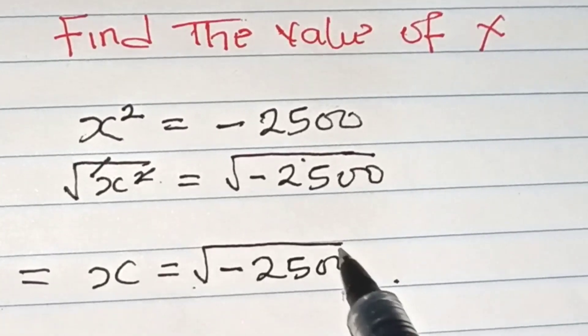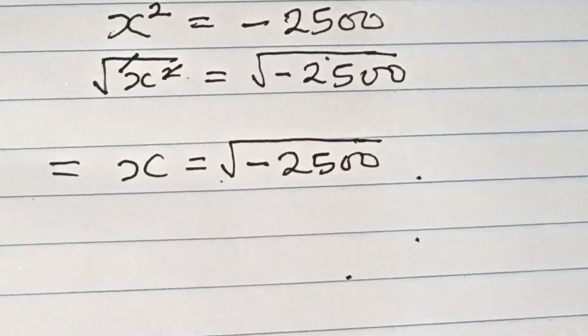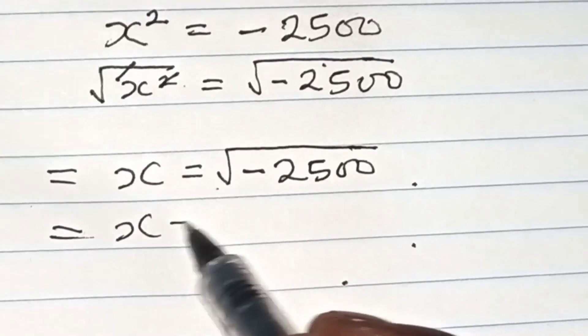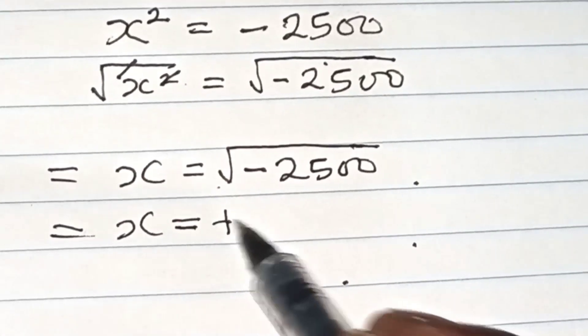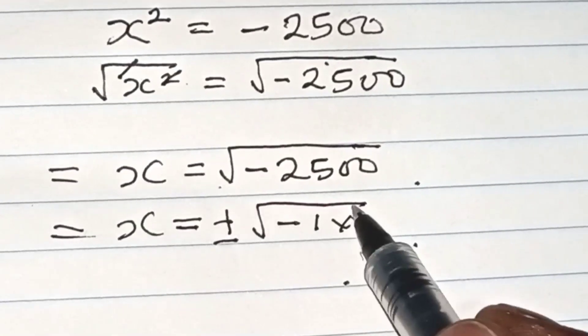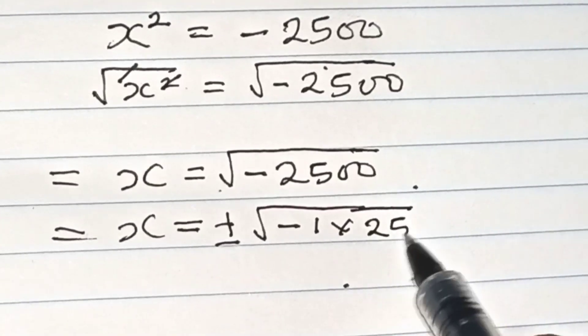So what we are to do here is X equals plus or minus square root of minus one times two thousand five hundred.